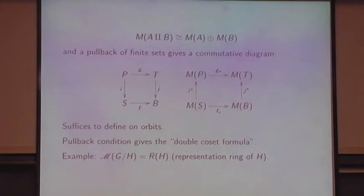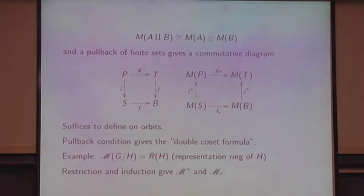The example that led to the use of Mackey functors in representation theory is the complex or real representation ring: classical restriction and induction of representations gives you an example of a Mackey functor. You have a G representation which is an H representation; if you have an H representation you extend via G tensor over H.